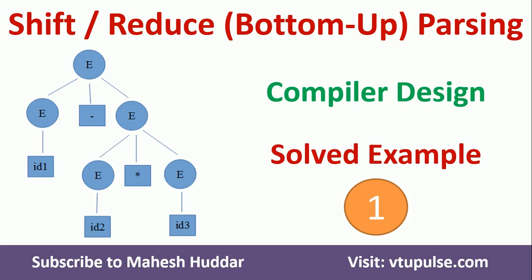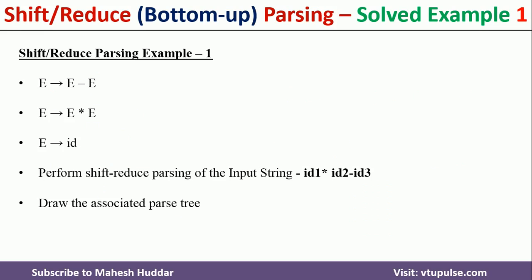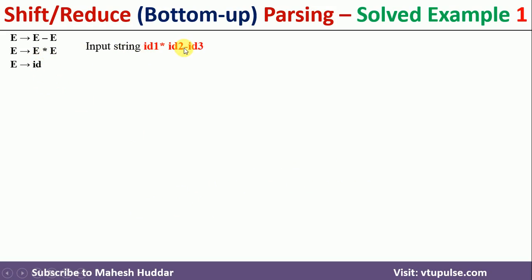Welcome back. In this video I will discuss a numerical example on shift-reduce or bottom-up parsing. This is the first solved example; links for other solved examples are given in the description below. We have been given a grammar and we need to validate whether the input string id1 * id2 - id3 is valid or not, and we also need to draw the parse tree.